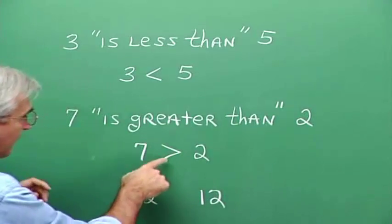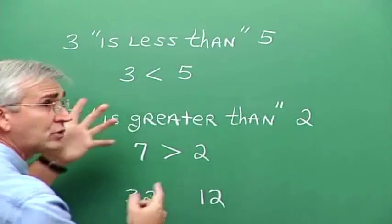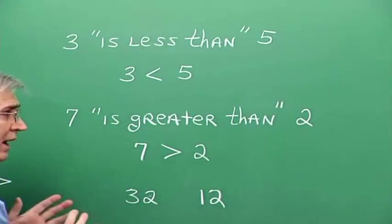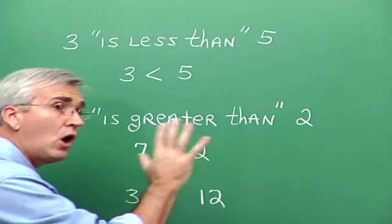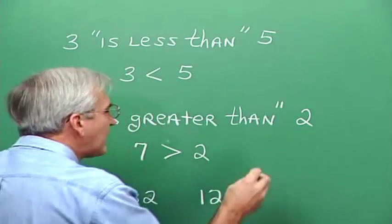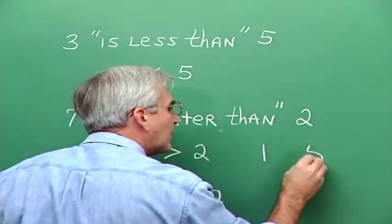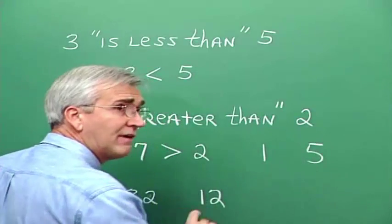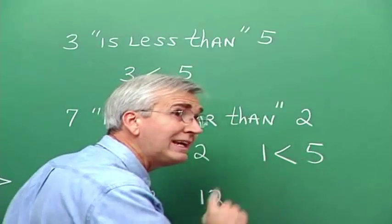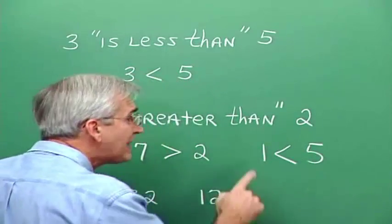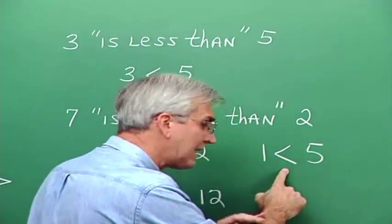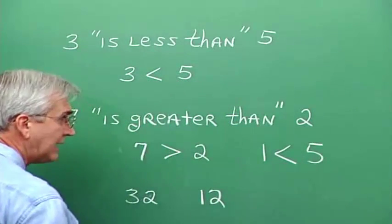A lot of times, if you forget which way the arrow goes and which one means less than or greater than, then what you can do is just write a couple of numbers down that you know the relative size of. For instance, put one and five up here. We know that one is less than five. Now make the arrow point toward the small one and read it as you understand it. 'One is less than five' — oh, this means 'less than.' So that's the idea.